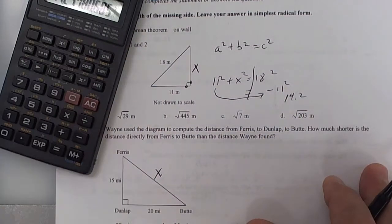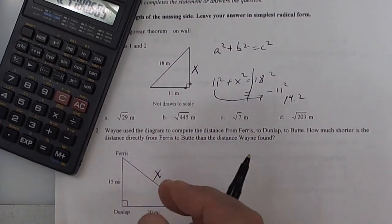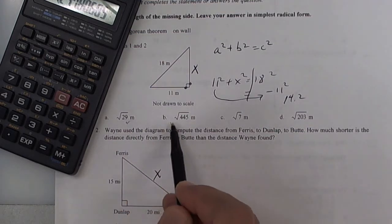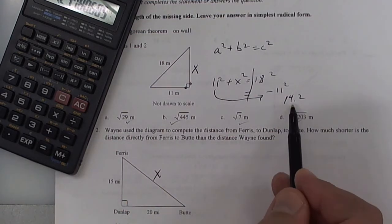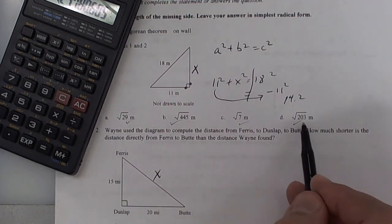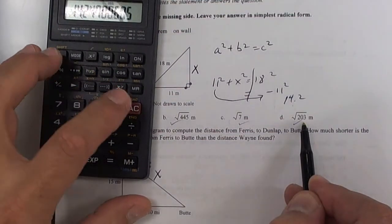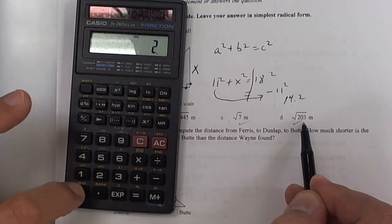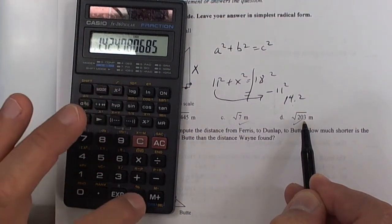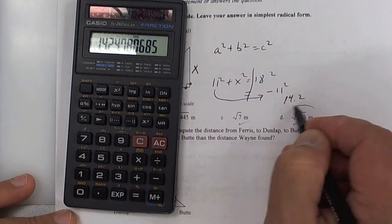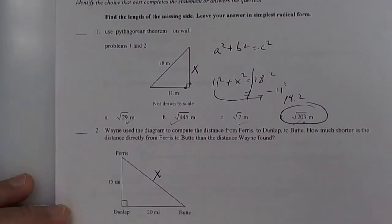So on your calculator, I think this is 121. So 18 squared minus 121 equals shift square root. I get 14.2. Now, if you look at your choices, I don't see 14.2. So work each one of these with your calculator until you get 14.2. Does anybody know which one it is? It's this one? All right, so let's try that one.